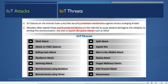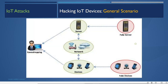Specific IoT threats include attacks on HVAC systems, rolling code attacks, BlueBorne attacks, jamming attacks, remote access using backdoors, remote access using Telnet, Sybil attacks, exploit attacks, man-in-the-middle attacks, replay attacks, forging malicious devices, side-channel attacks, and ransomware attacks.